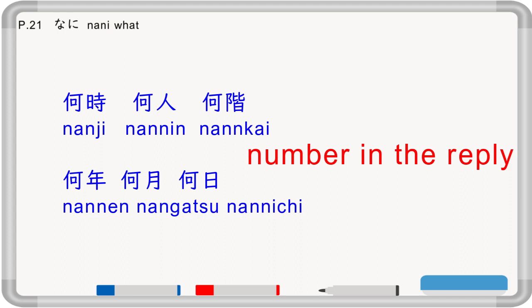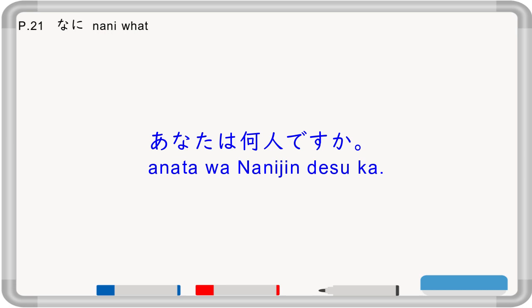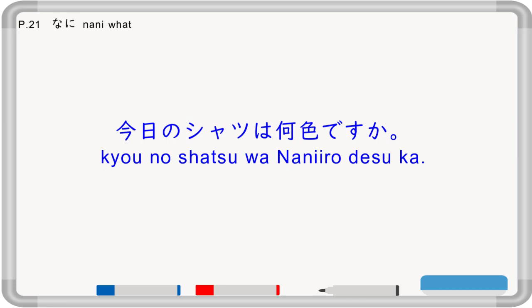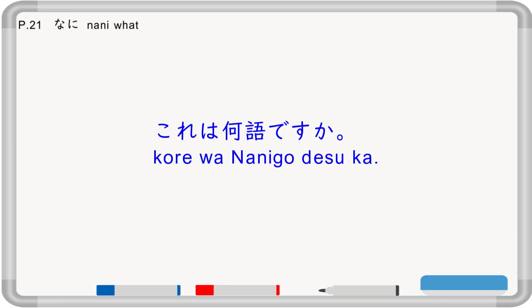But 'nani yobi' — to ask what day of the week — is irregular; you answer getsu yobi, ka yobi, sui yobi, and so on. 'Anata wa nanijin desu ka?' asks your nationality. 'Kyo no shatsu wa naniro desu ka?' — naniro means what color; if you're in a black shirt, 'kuro desu'; red shirt, 'aka desu'. 'Kore wa nanigo desu ka?' — nanigo is what language; 'nihongo desu', 'kankokugo desu', 'eigo desu'.